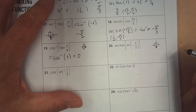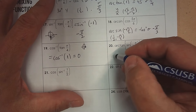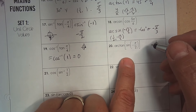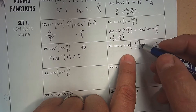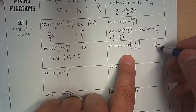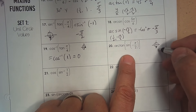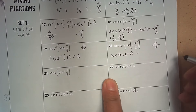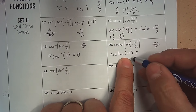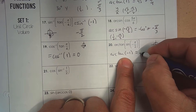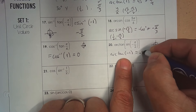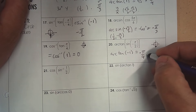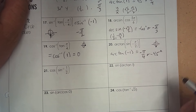At negative pi over 2, the y-coordinate is negative 1, so sine of negative pi over 2 equals negative 1. Then arc tangent of negative 1: tangent equals negative 1 in quadrant 4 with a 45-degree reference angle, so write it as negative 45 degrees or negative pi over 4.